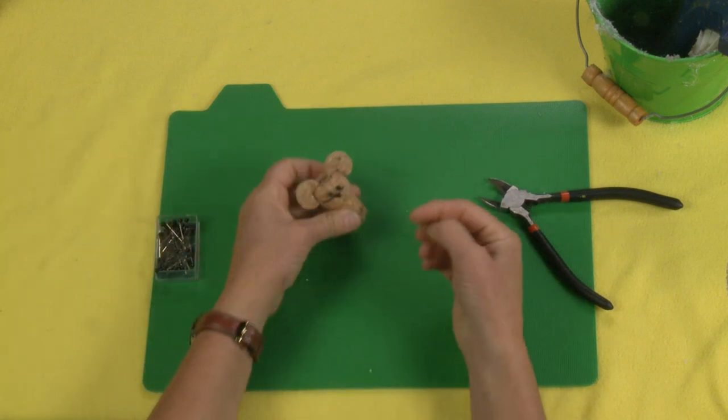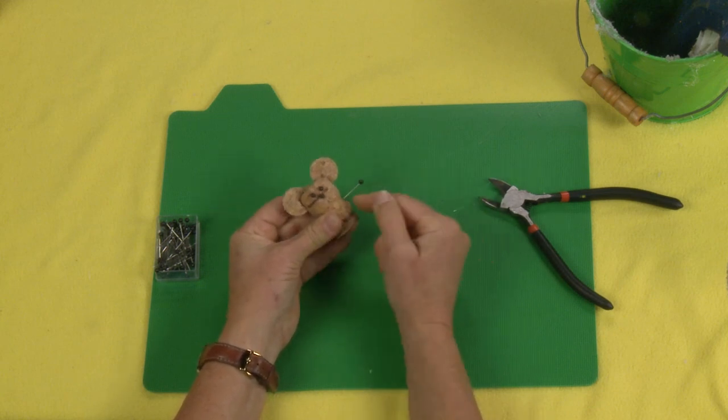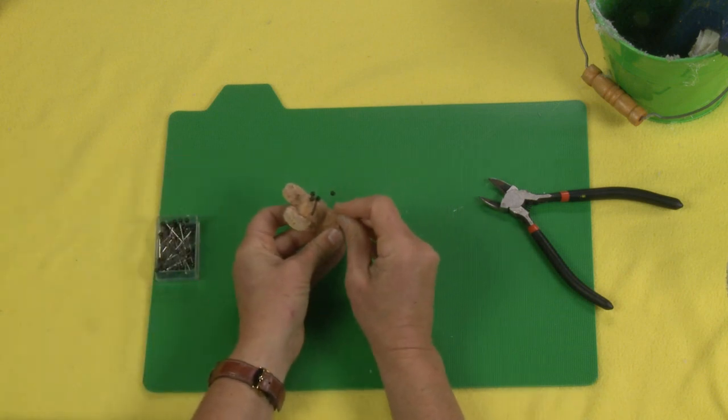The next thing we're going to do is add some arms. Going to add those right up next to her neck. And this we're going to use a full pin. And just pin that in.